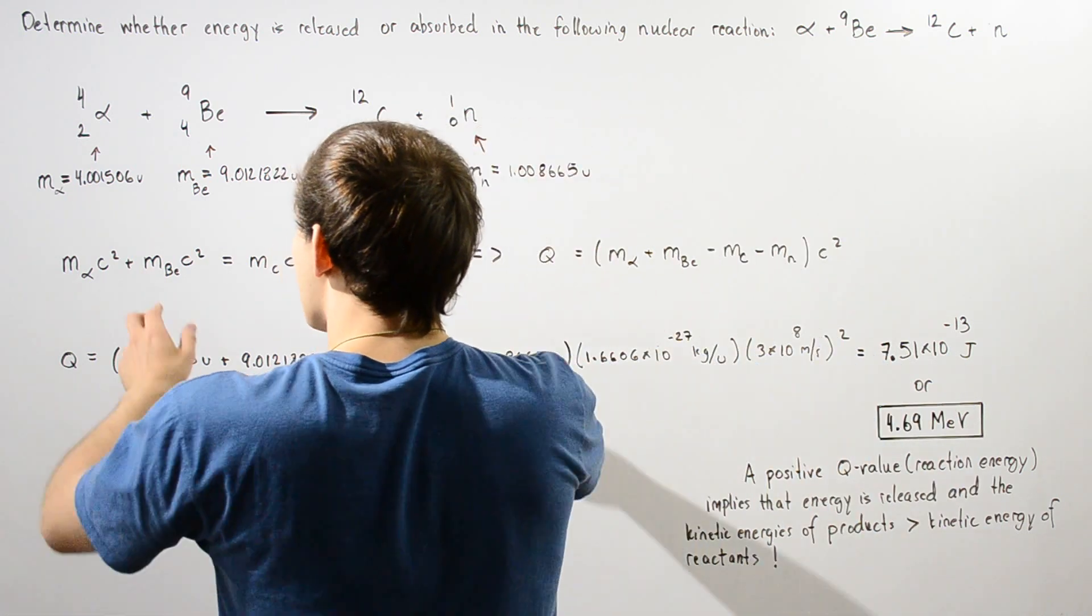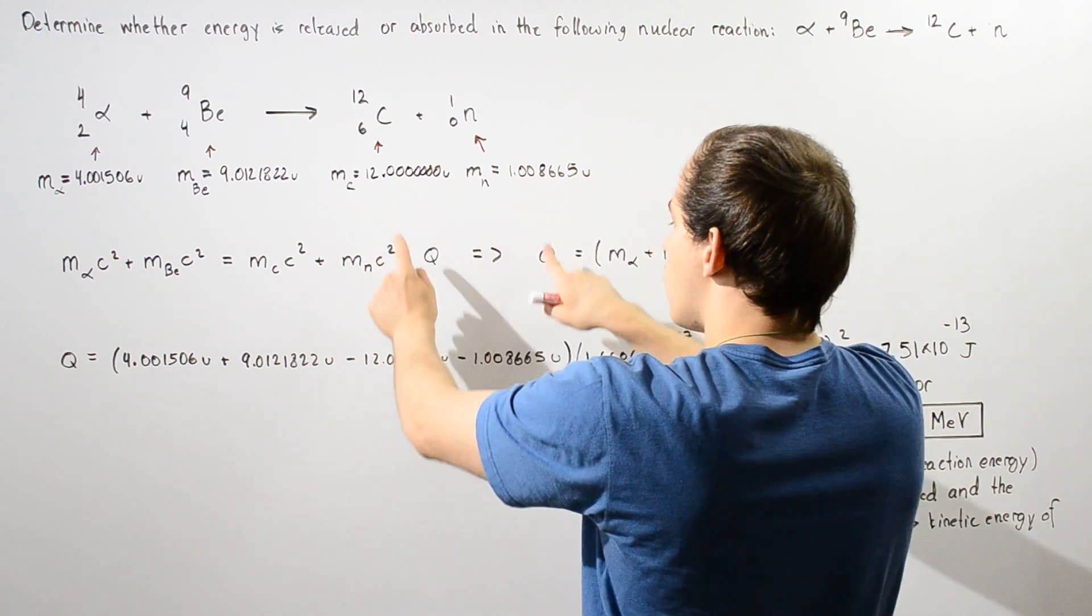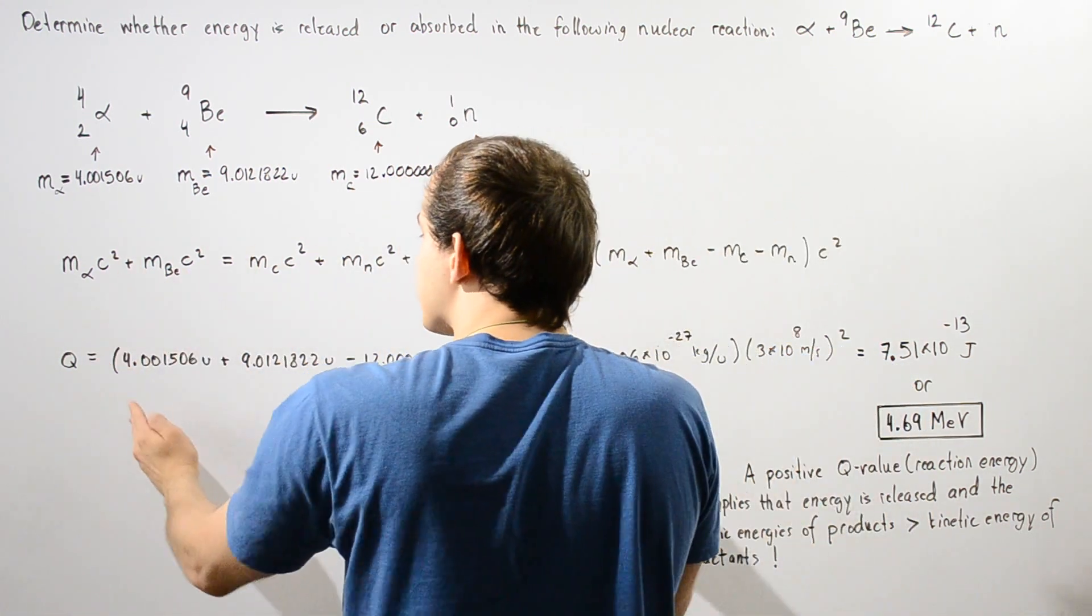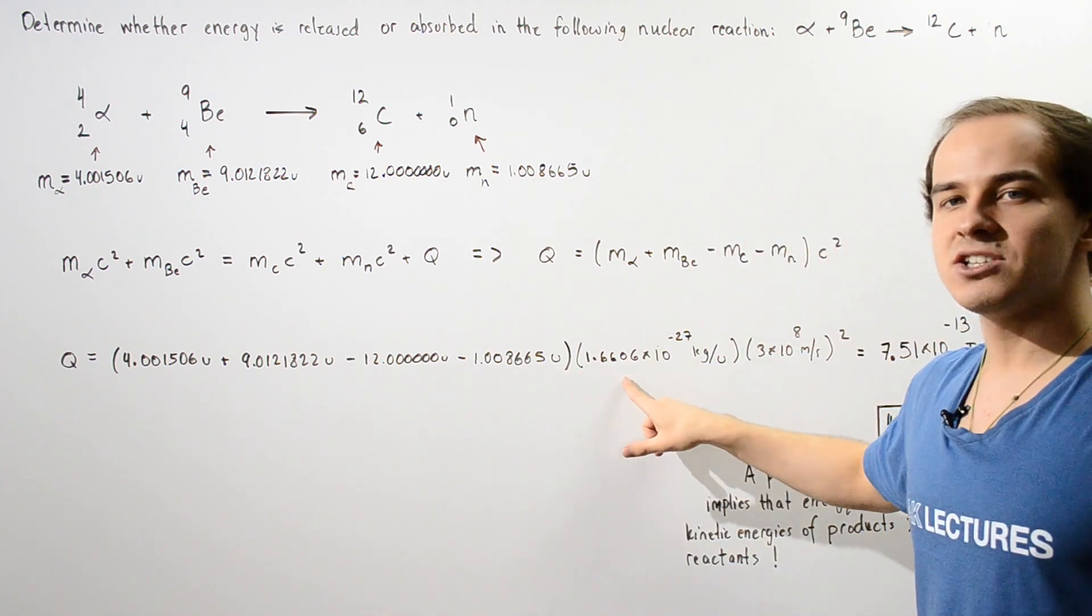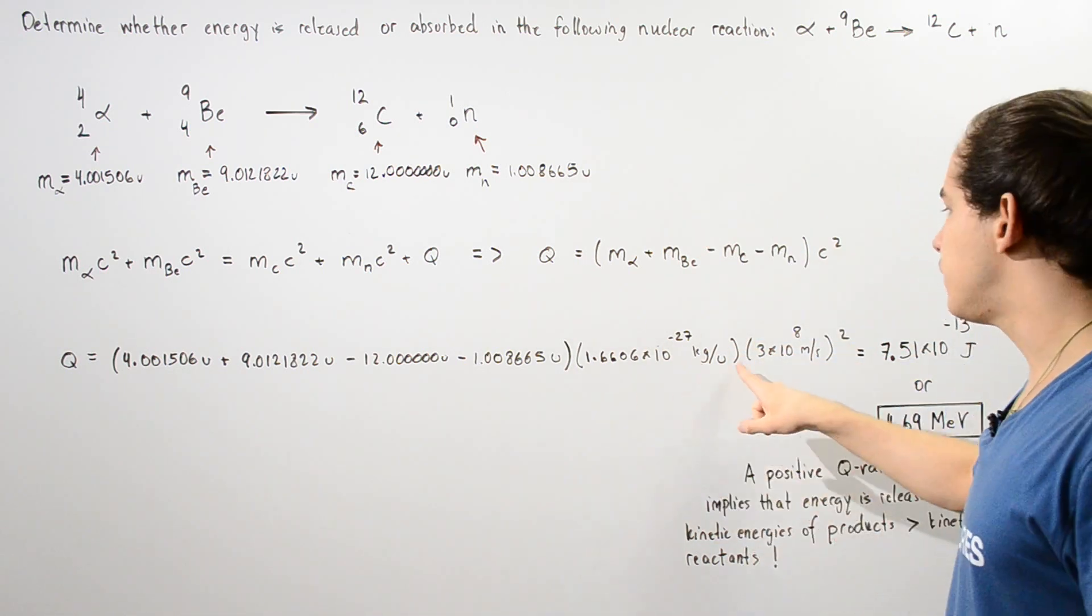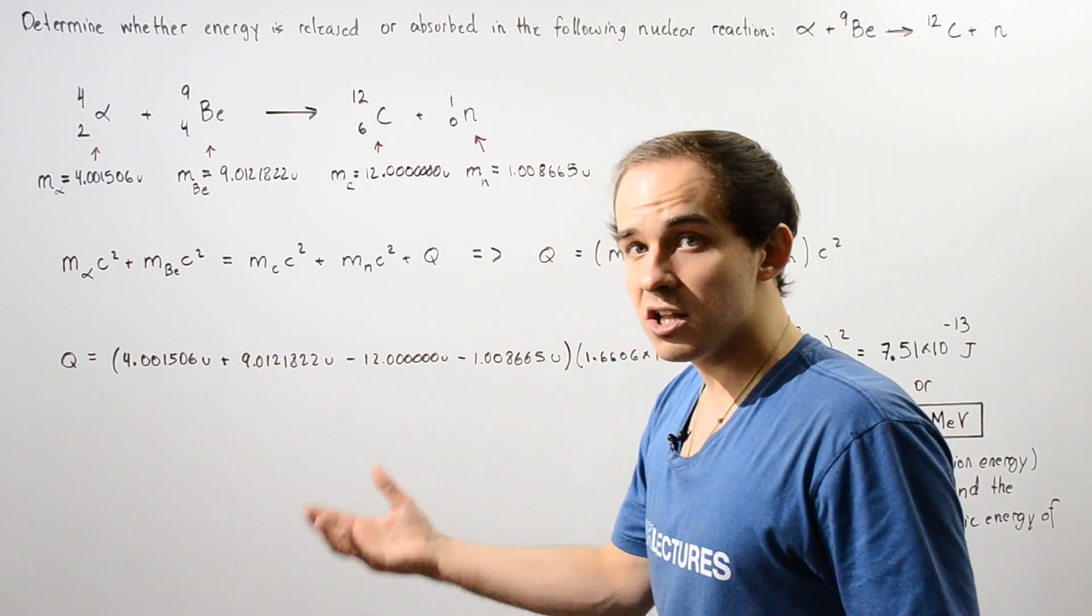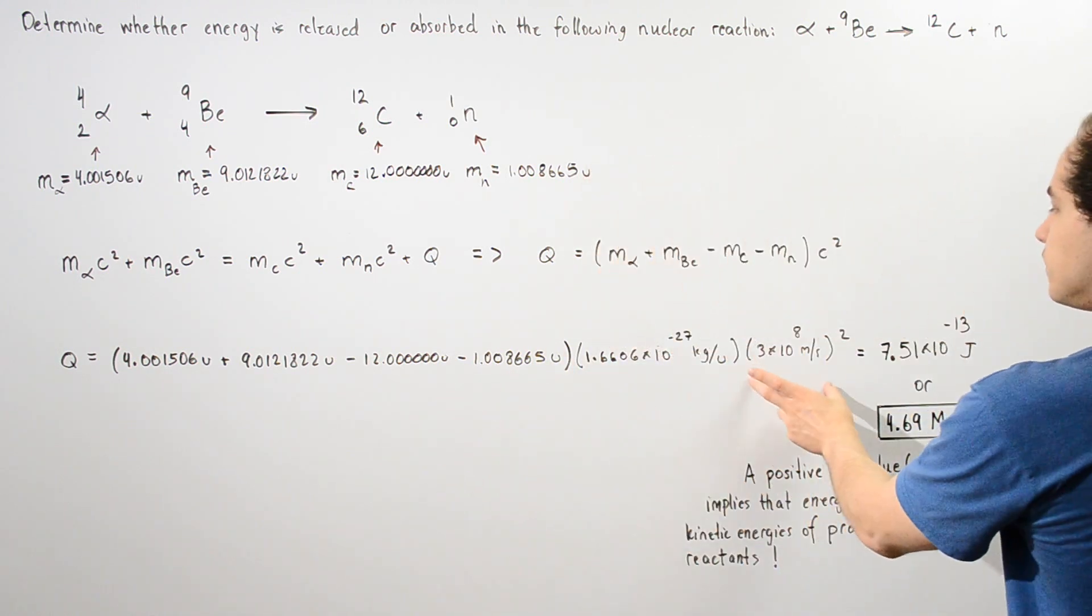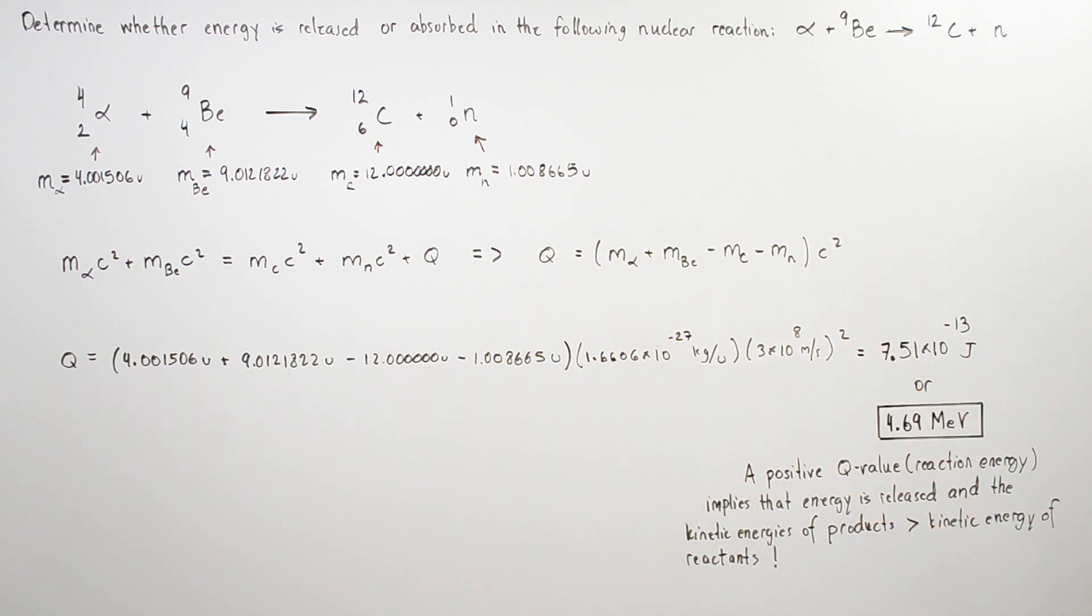Let's take the sum of these two quantities and subtract that from the sum of these two quantities. Then multiply by the conversion factor of 1.6606 times 10 to the negative 27 kilograms per unified atomic mass unit. The units cancel and we get the mass in kilograms. Then we multiply by the speed of light in a vacuum and get an energy of about 7.51 times 10 to the negative 13 joules.